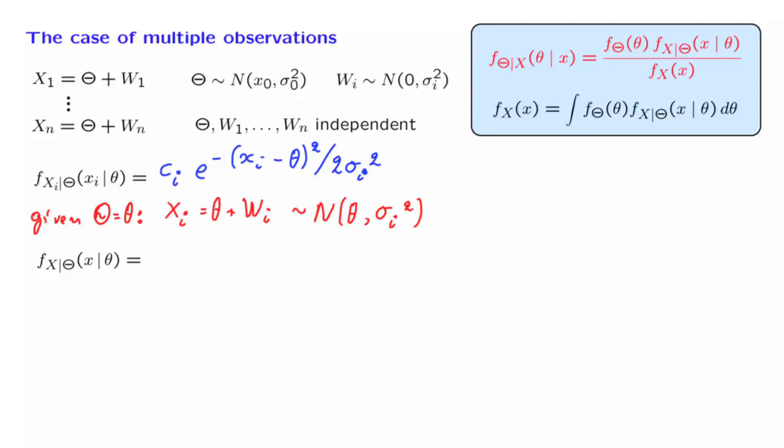Let us move next to this distribution here. This is a shorthand notation for the joint PDF of the random variables x1 up to xn, conditional on the random variable theta. So it's really a function of multiple variables. And how do we proceed now?